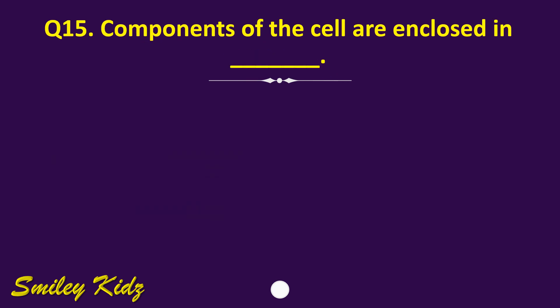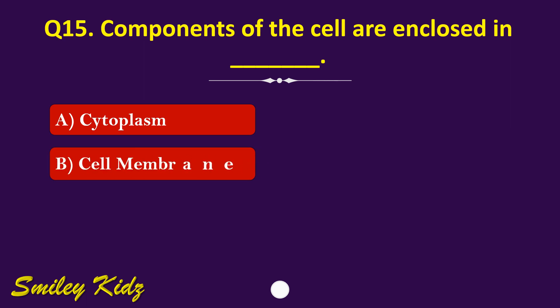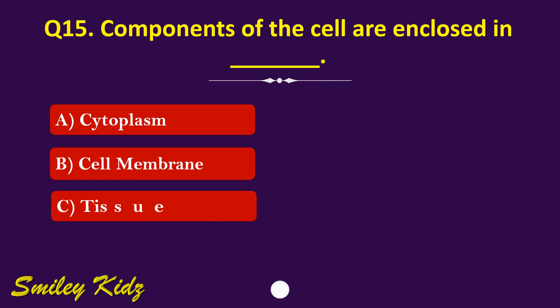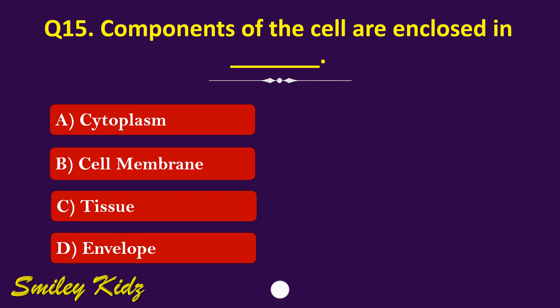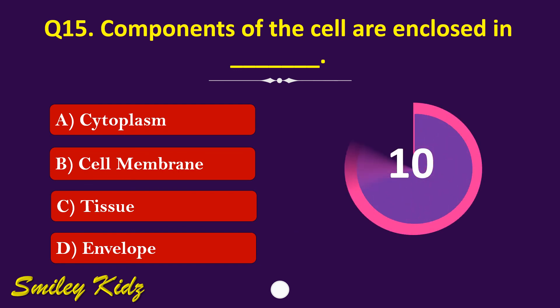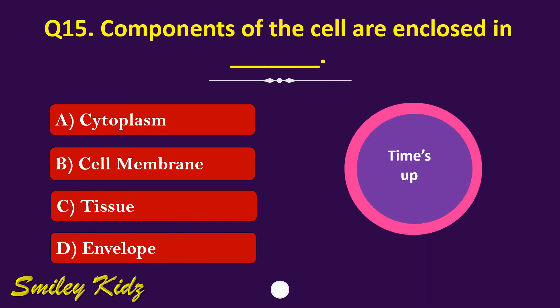Question number 15. Components of the cell are enclosed in dash. The options are: A. Cytoplasm, B. Cell membrane, C. Tissue, or D. Envelope. Your time starts now. Your time is up and the right answer is option B. Cell membrane. Components of the cell are enclosed in cell membrane.